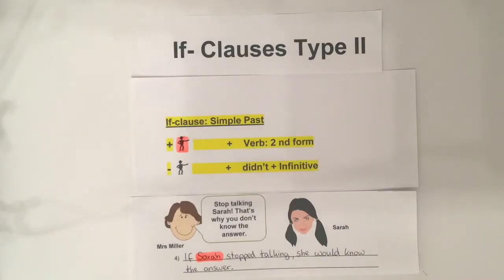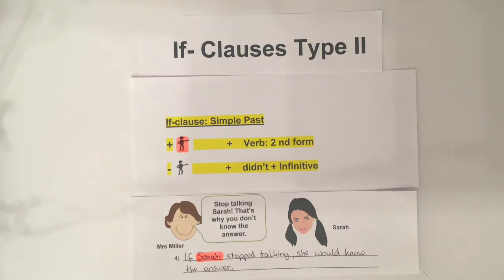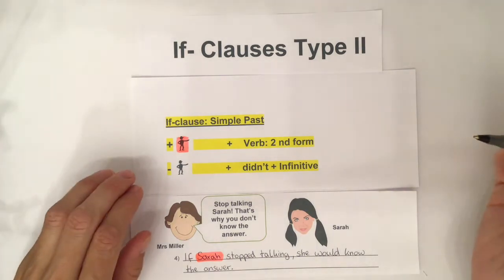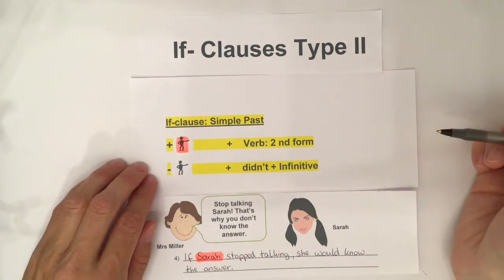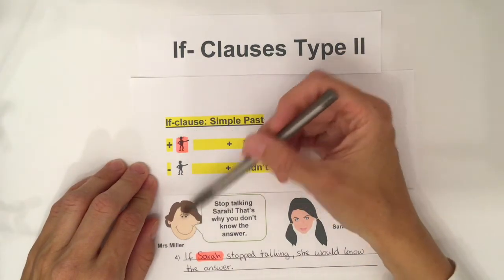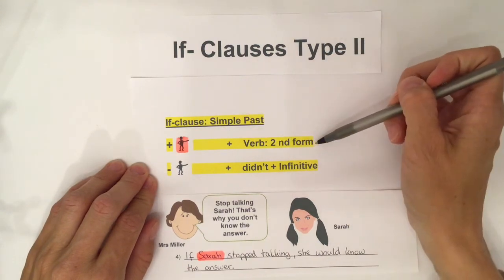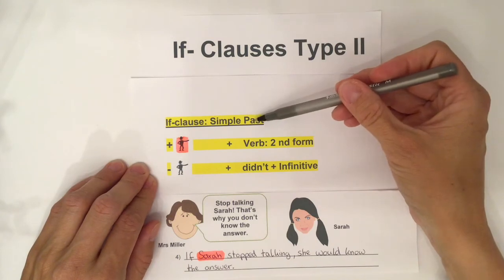Let's have a look at the structure. Each sentence has got two parts: we usually have the if-clause and the main clause. We can have either a positive or a negative sentence. For a positive sentence, we form the if-clause with 'if' plus the person plus a verb in the second form — the simple past form.